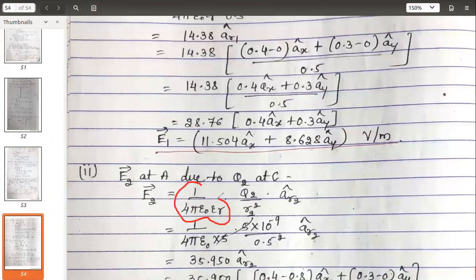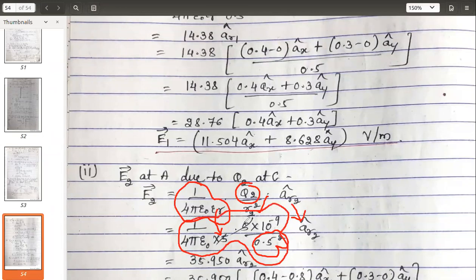E2 is 1 by 4πε₀ into εᵣ. Here εᵣ should be taken 5, and charge q2 by the distance squared. Distance is already given to you, it is 0.5 squared times ar2. Let me keep it as it is, I'll put it at the end.